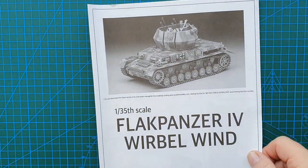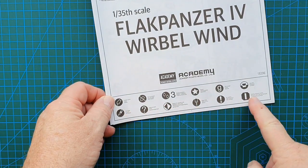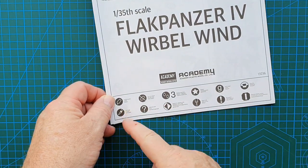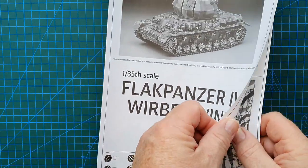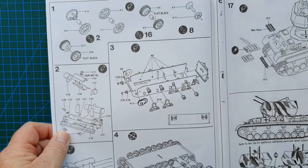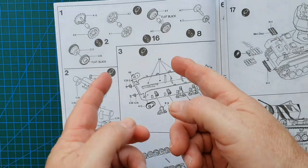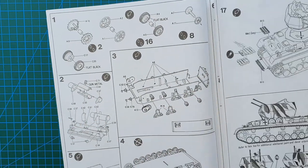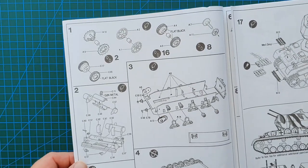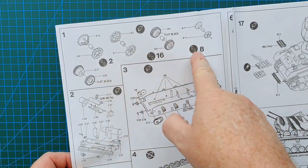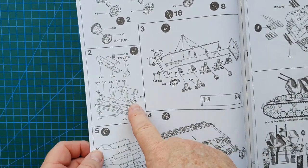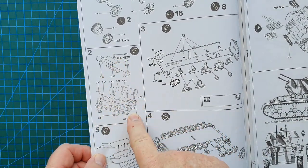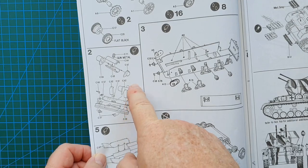Let's have a look at the instructions. Fairly straightforward on the front is the usual indicators for what to glue, what to cut, alternative parts, etc. Overleaf it starts straight into assembling the wheels. There is no sprue layout in these instructions, so you start off with the drive sprockets, idler wheels, road wheels, etc.